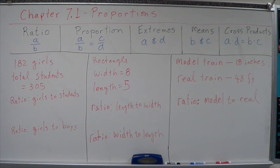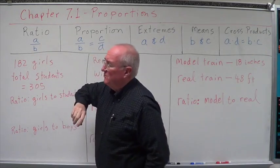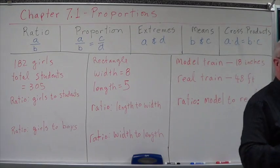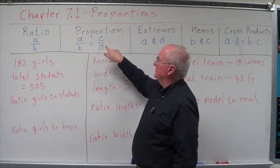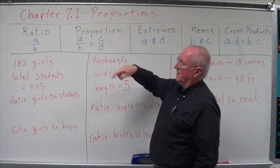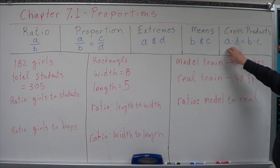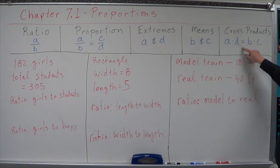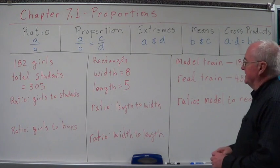So I put up here what these definitions look like. What is a ratio? It's a comparison of two numbers using division. Proportion is we're setting two of those comparisons equal to each other. Extremes, numerator of the first, denominator of the second, A and D. The means, denominator of the first and the numerator of the second, B and C. Cross products, the extremes, product of the extremes equals the product of the means. A times D equals B times C. And I'll just leave that up there for these examples.